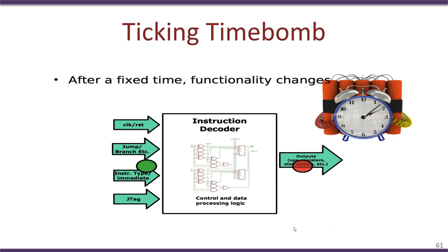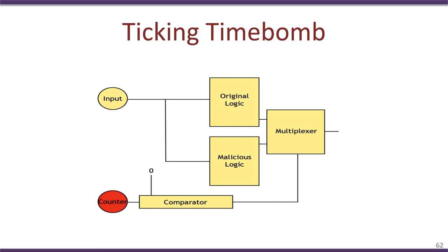Let us start with the ticking time bomb trigger. What a ticking time bomb trigger does is that it waits for a fixed time and then triggers the hardware trojan's payload to execute. This time is typically specified by the attacker. The attacker may want the trojan's trigger to get activated after a few months, a few weeks, a few years, or maybe at a specific time during the year.